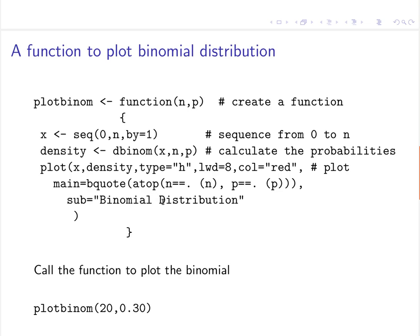Another nice feature of R is that you can build new functions. Let's build a function called plot_binom. The syntax uses curly brackets to enclose the body of the function. This function takes inputs n and p for the size of the binomial and the probability of success. We build the sequence, compute the density, and plot the lines with increased line width, red color, and a heading.